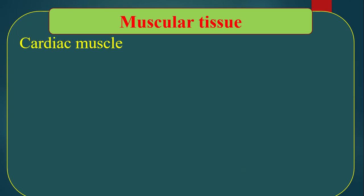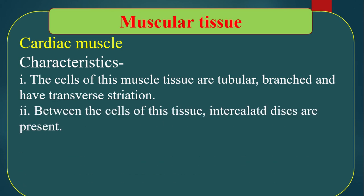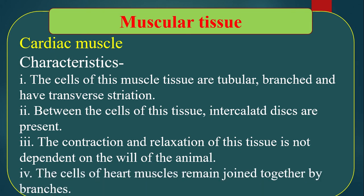Cardiac muscle is the special type of muscle which is present in the heart and helps to form our heart. Characteristics — number one: the cells of this muscle tissue are tubular, branched, and have transverse striations. Between the cells of this tissue, intercalated discs are present. The contraction and relaxation of this tissue does not depend on the will of the animal. The cells of heart muscle remain joined together by branched cells.